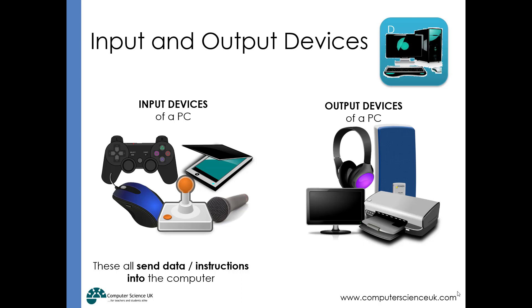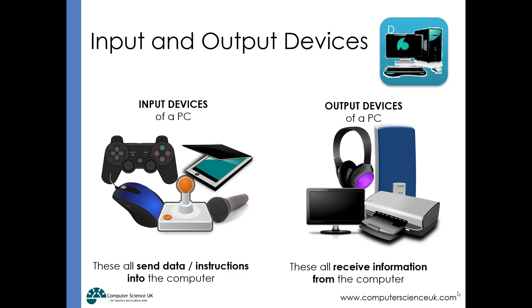In terms of output devices of a PC: a monitor presents visual information as an output to the user; a printer outputs information in the form of printed paper; and speakers present information in the form of sound to the user. Output devices all receive information from the computer and present it to the user. Hopefully we now have a better understanding of what a computer is, how important input and output devices are, and how we can control computers and get information back out.